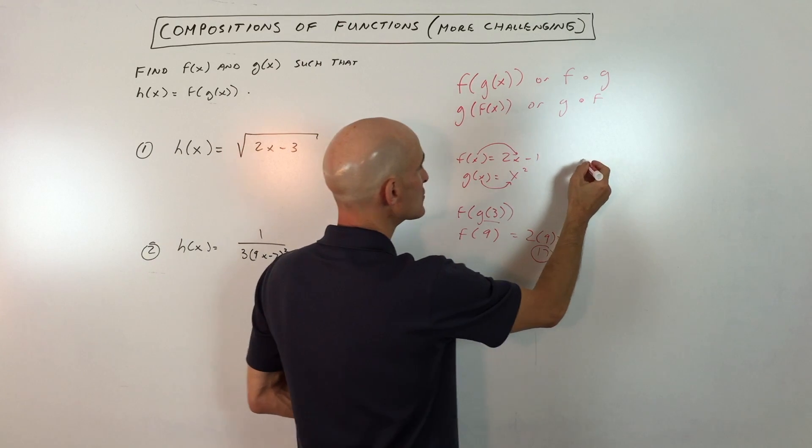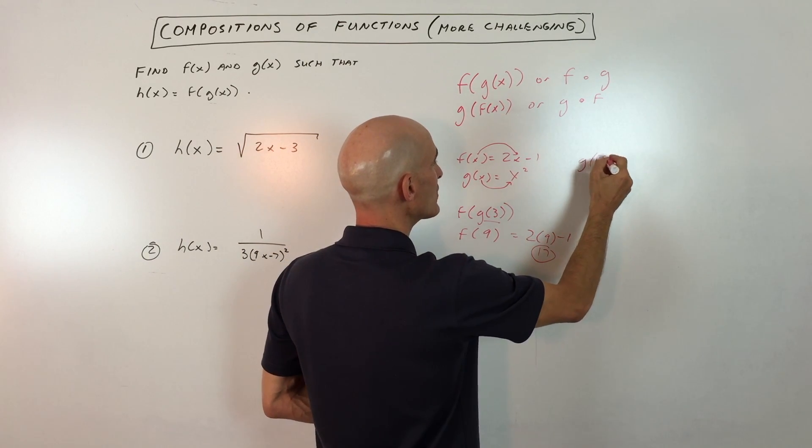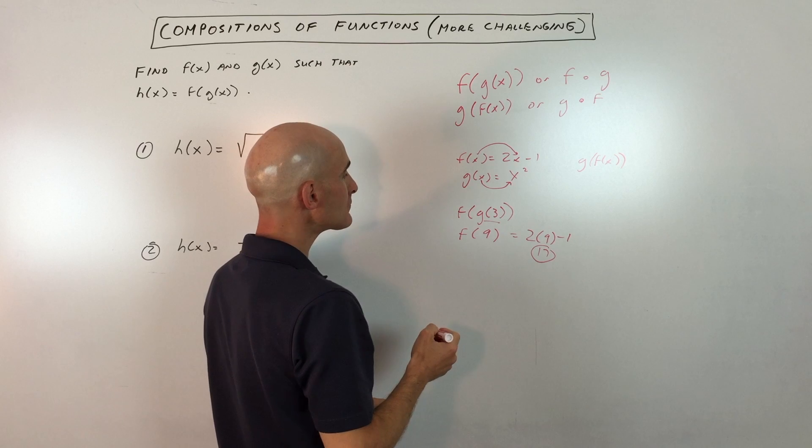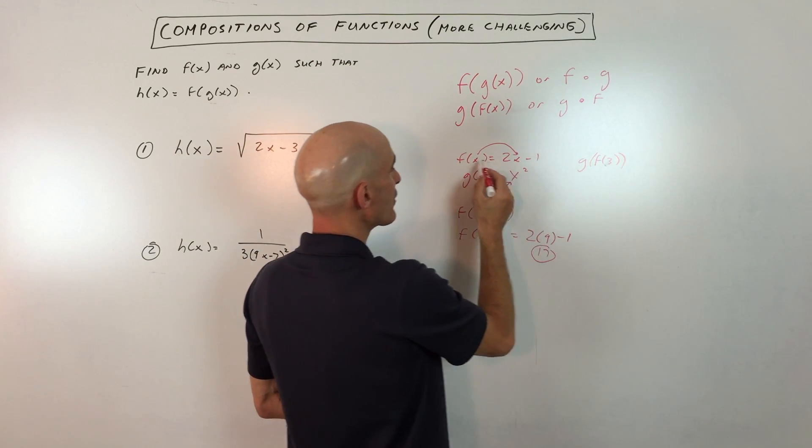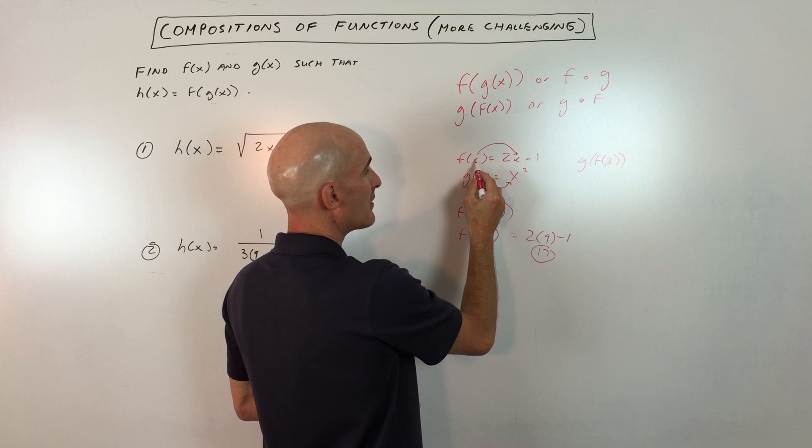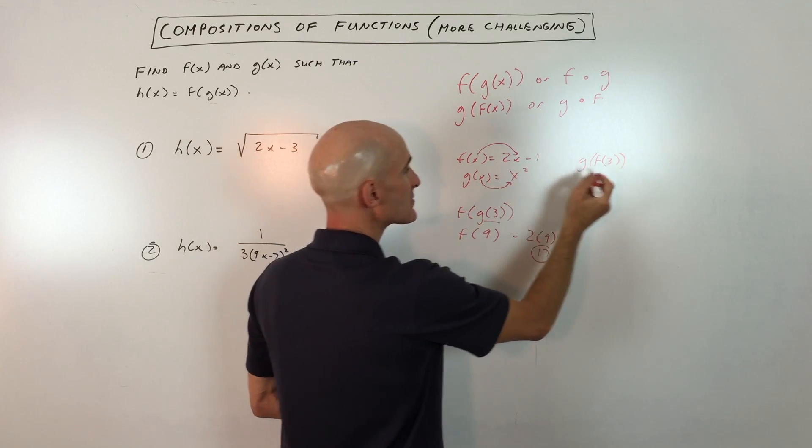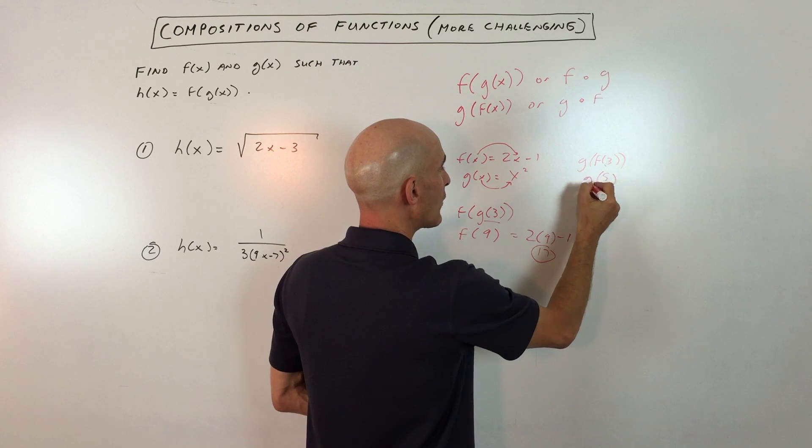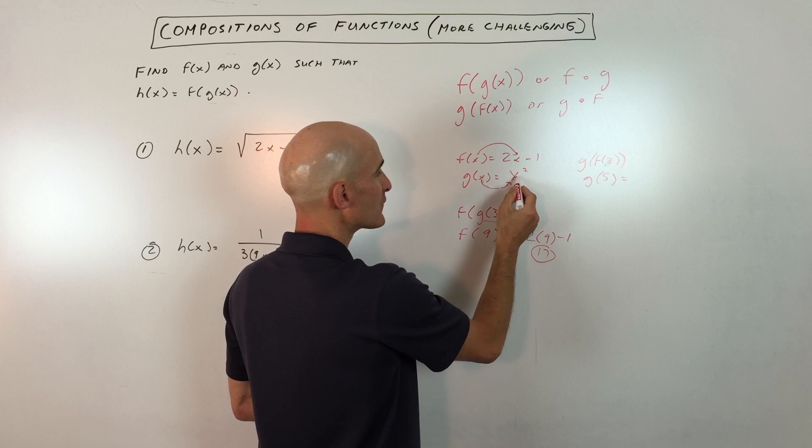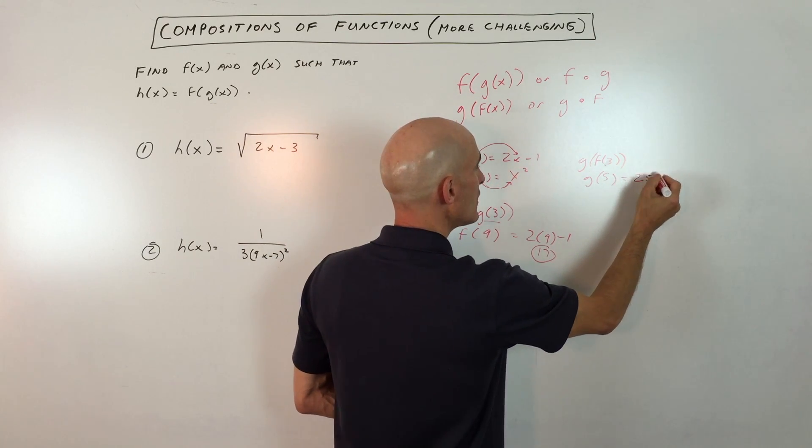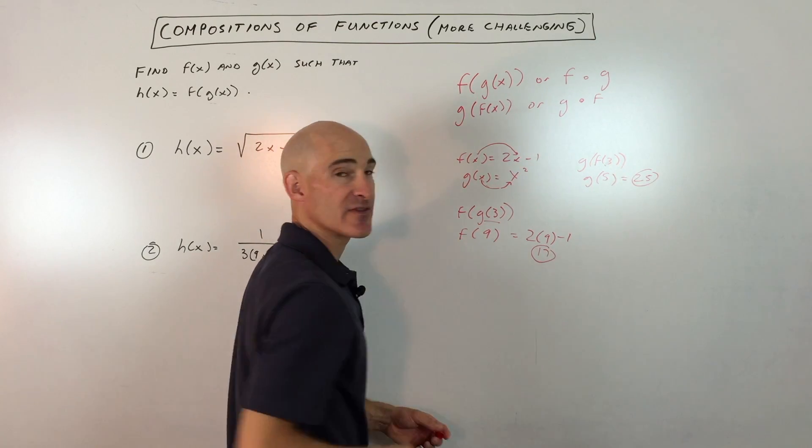Now if we do this in reverse, you'll see you don't necessarily get the same answer. If we do g(f(3)), we're putting 3 in for x in the f function, so 2(3) - 1 = 5. Now we're calculating g(5), so 5 goes in for x, giving us 5² = 25. You can see those are not the same.